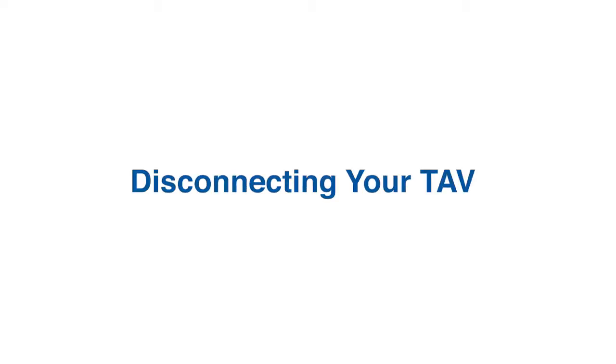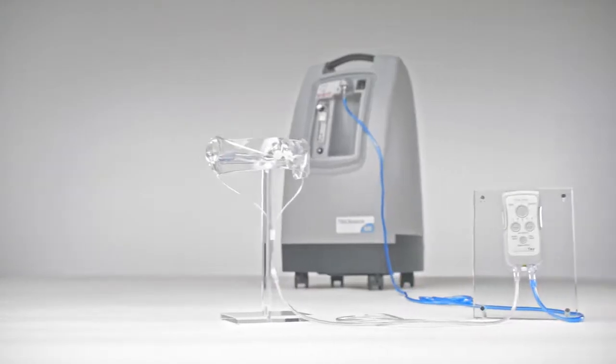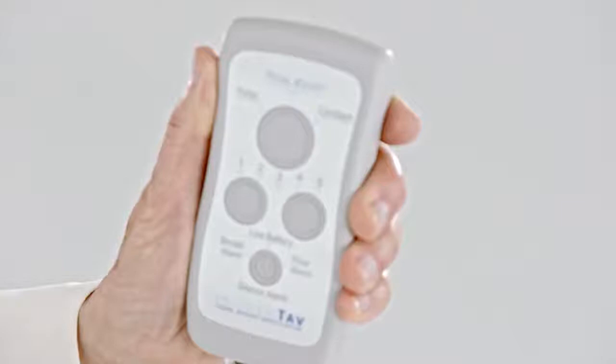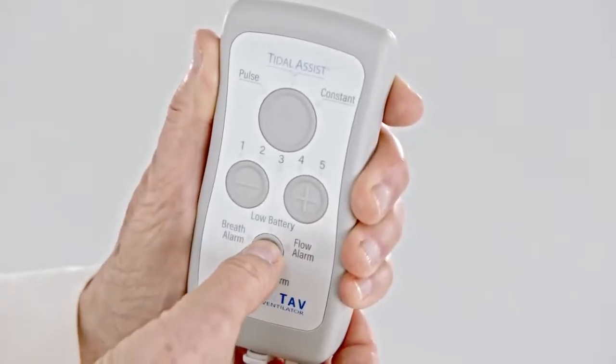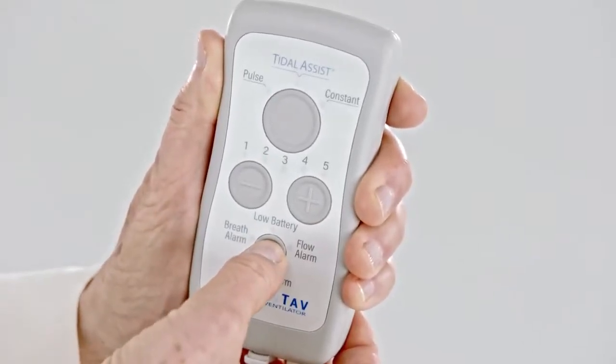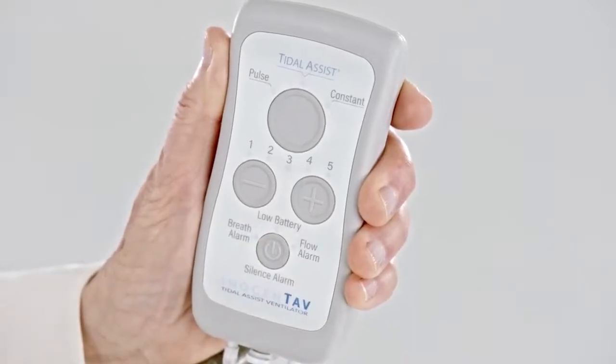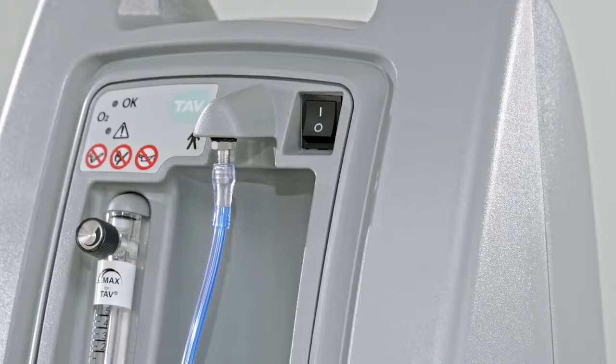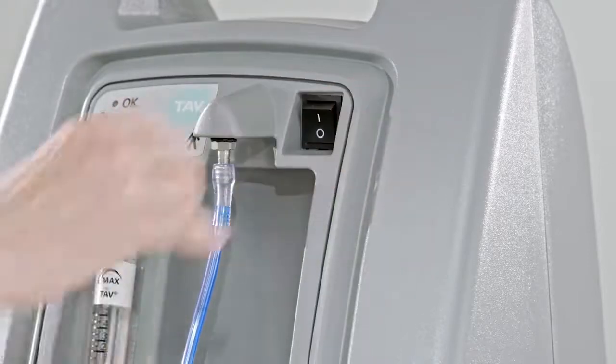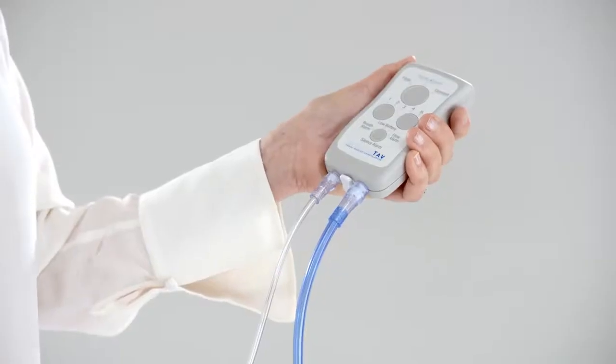Before you go, let me show you how to disconnect your TAV system from the NIDEC concentrator. Start by turning off your TAV controller. Hold down the power button for a few seconds. A double beep will confirm it's off. Now you can switch off your NIDEC concentrator and disconnect the tubing connections.